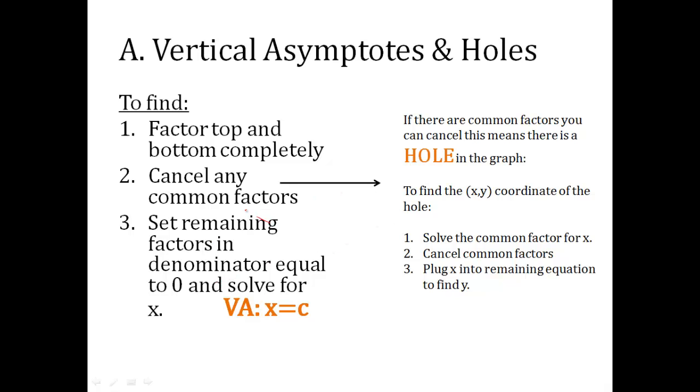Now, what happens if there are common factors? For instance, if you had x minus one times x plus three over x plus four times x minus one, those two x minus one factors would be canceled out. And you'd set remaining factors equal to zero in the denominator. Now if there is a common factor you can cancel, that represents a hole in the graph.